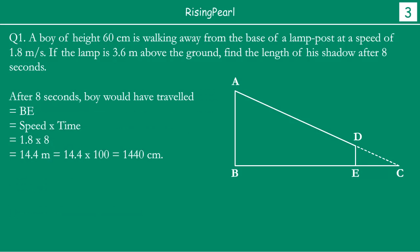So what we have here is after 8 seconds, the boy would have traveled the distance BE, which is speed times multiply by time. So 1.8 multiply by 8 will be 14.4 meter. Or 1440 centimeter. To convert meter into centimeter, you multiply by 100, not 1000. Right. So BE is 1440 centimeter.